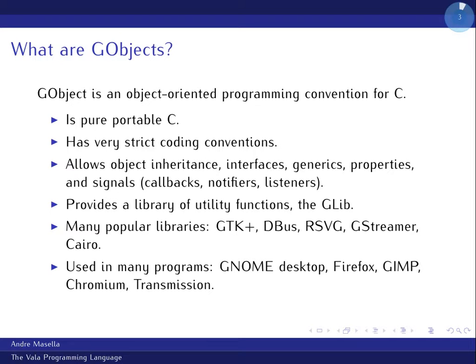The GObject system is an object-oriented programming convention for C, which is weird given C isn't object-oriented — that's why it is a convention. It is just regular C code, and you follow certain coding conventions about how functions, structures, and so on are to be named. By the magic of these libraries, which provide a huge number of macros, you get object inheritance, interfaces, generics, properties, and signals, which are callbacks or notifiers or listeners, depending on your language of choice.